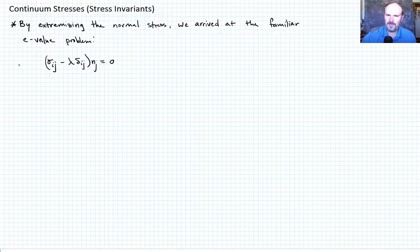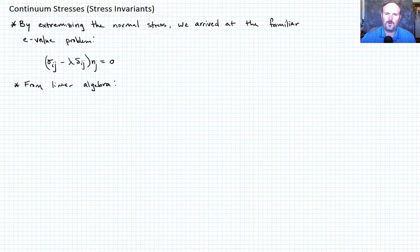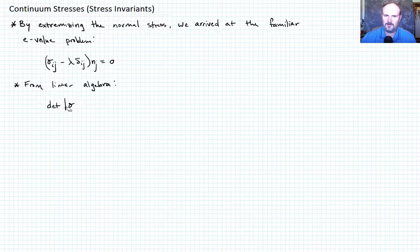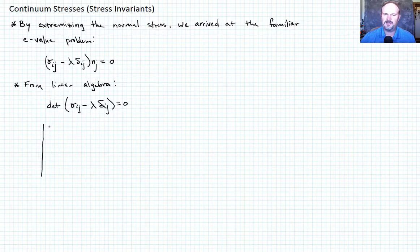From linear algebra, this equation is true if and only if the determinant of the quantity in parentheses equals zero. So we require that the determinant of sigma_ij minus lambda delta_ij equals zero. That leads to the characteristic equation. Let's go ahead and write that out. When doing determinants, I typically write them out longhand for these three-by-three matrices.